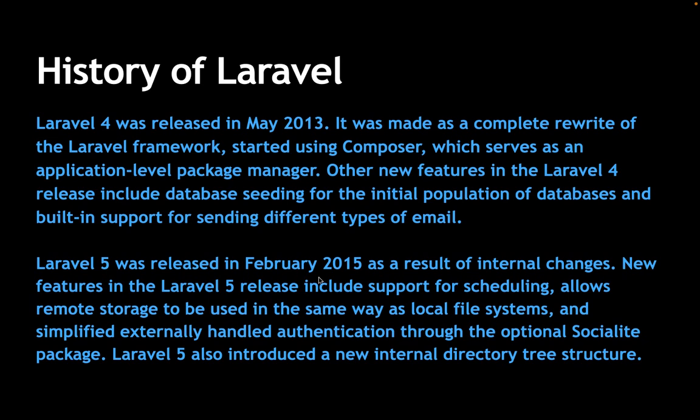Laravel 5 was released in February 2015. New features include support for scheduling — like cron jobs, which are tasks running at the back end on the server level. We can run APIs at the back end; for example, inventory APIs, order APIs, and payment gateway APIs. Scheduling allows APIs to run automatically at intervals, such as every half hour.